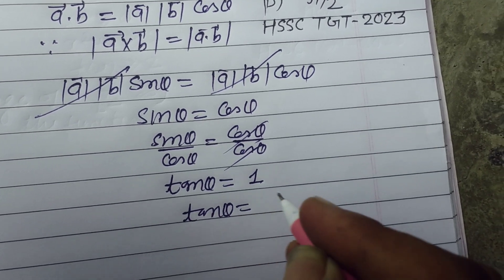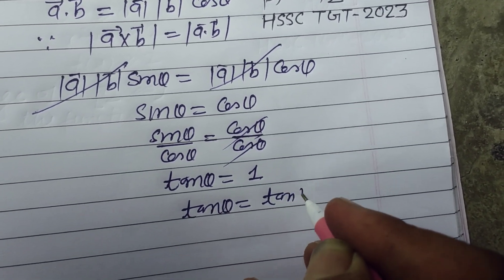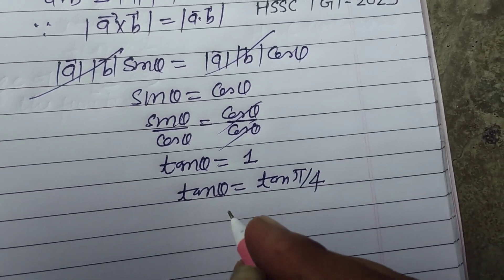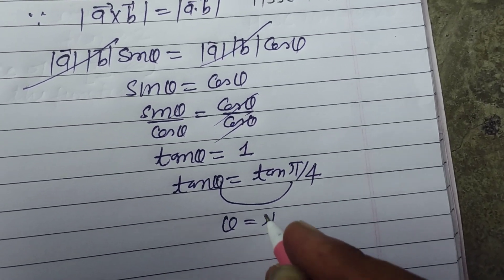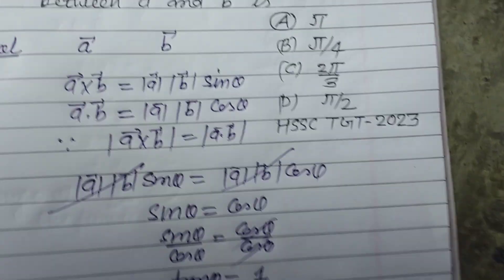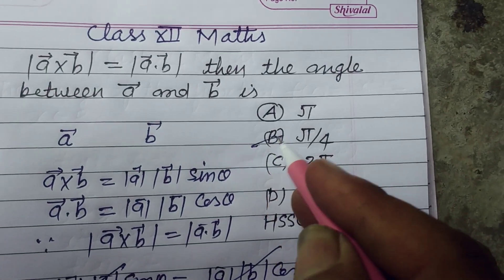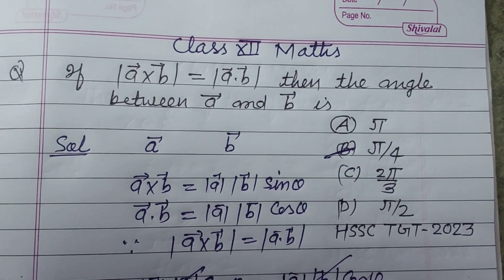Therefore tan theta equals the value of tan pi by 4. On comparing, here we got theta equals pi by 4. So pi by 4 is the angle between these two vectors which is found in option B. So option B is correct.